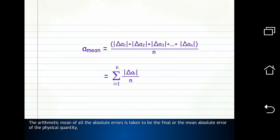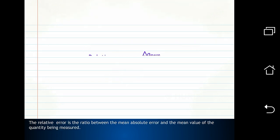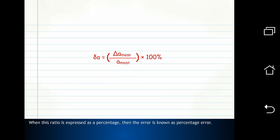The arithmetic mean of all the absolute errors is taken to be the final or the mean absolute error of the physical quantity. The relative error is the ratio between the mean absolute error and the mean value of the quantity being measured. When this ratio is expressed as a percentage, then the error is known as percentage error.